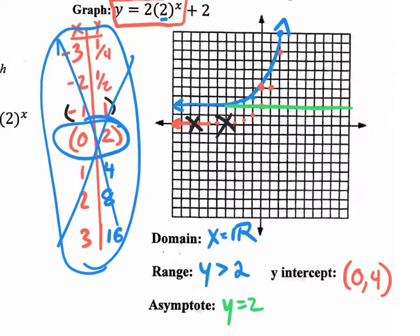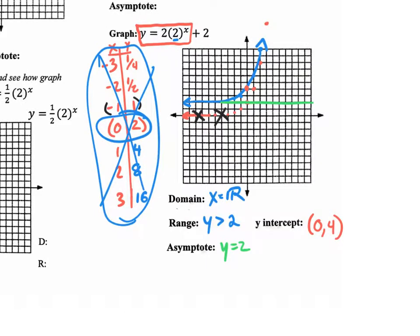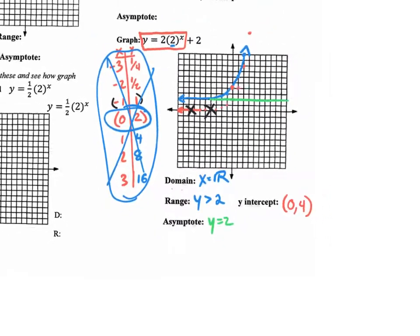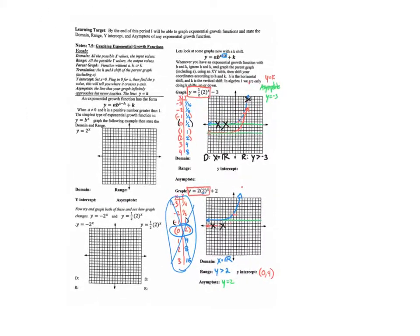That's all the information we need right there. All we need to do now is flip the paper over to the homework section and practice the rest — those that do have a k-shift, like these last two examples we did on this second half of the lesson. I'm going to stop this video here and pick up on another video explaining the homework: all those exponential growth functions that do have a k-shift.